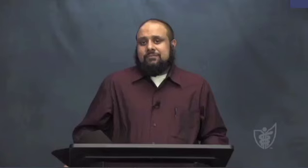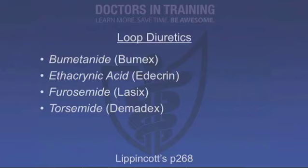The third class are the loop diuretics — and believe it or not, they work in the loop of Henle; that's why they're called loop diuretics. The primary loop diuretics are bumetanide, ethacrynic acid, furosemide, and torsemide. Remember, as soon as we exit the loop of Henle, we're back in the cortex at the distal convoluted tubule.